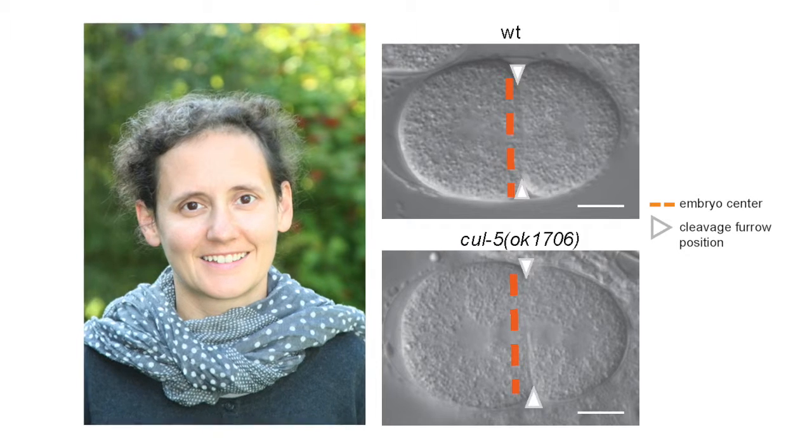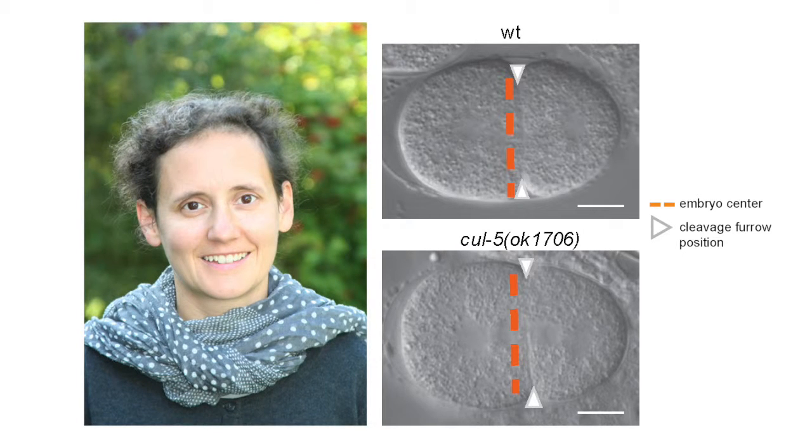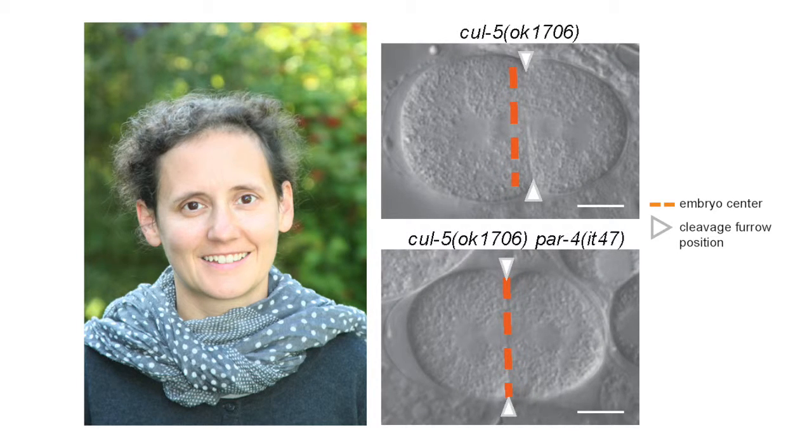I wanted to know what is it doing during embryogenesis and actually the CULIN5 mutant alone did not have obvious defects. As I was working on polarity and PAR proteins I started to test possible genetic interactions between CULIN5 and different PAR mutants and I found this very nice genetic interaction between CULIN5 and PAR4 where we see that the furrow is not in the right position.